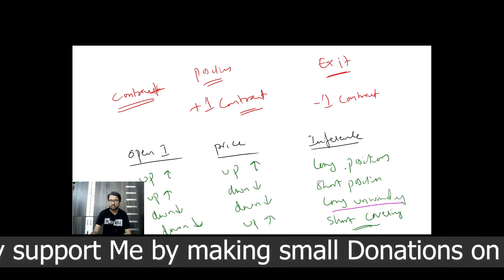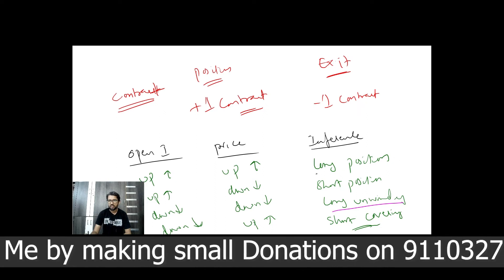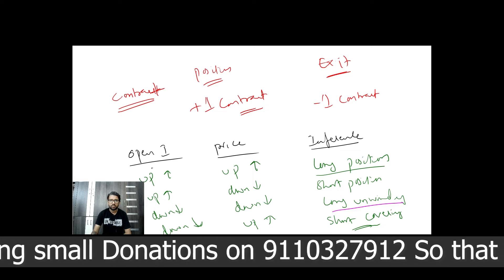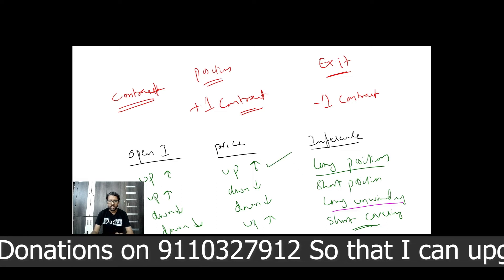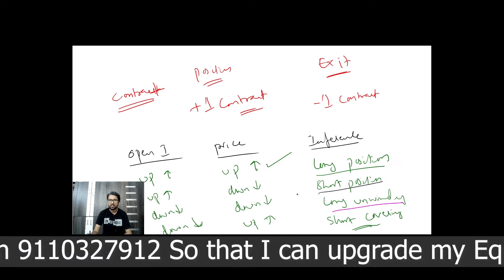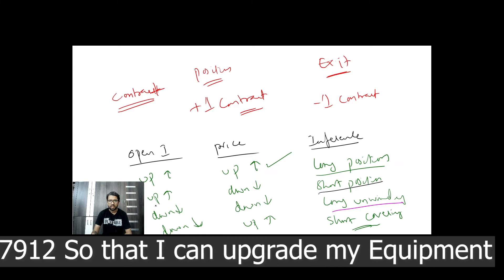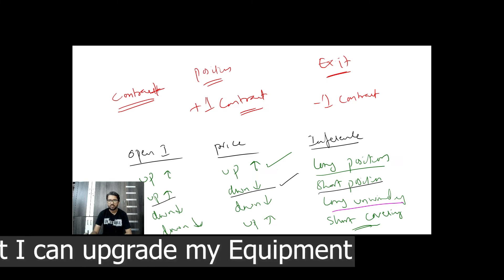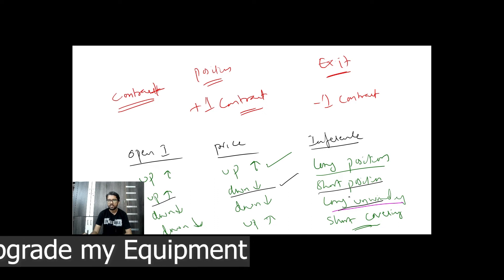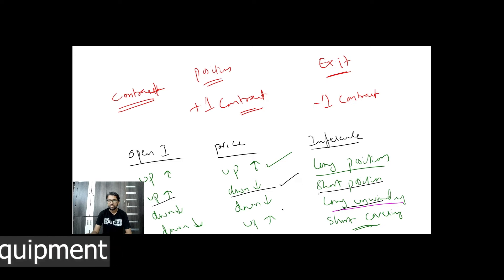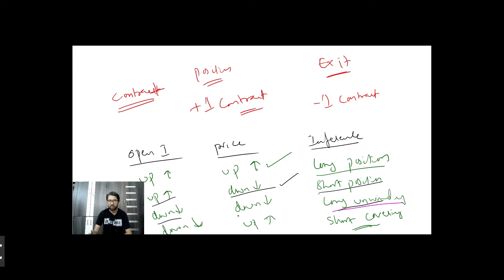Let me recap. For a long position, both open interest and price are up. For a short position, everyone is selling — open interest and price will increase. For long unwinding: profit booking or loss-making — open interest down, price down. For short covering: profit booking — open interest down, price up.